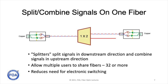The splitters split the signals for all users connected to the central office in the downstream direction, and they combine signals in the upstream direction. They allow multiple users — 32 or more in a typical PON network — to share the same fibers, which reduces the need for electronic switching. Each user's signals are uniquely encrypted, so they can't read their neighbors' data.